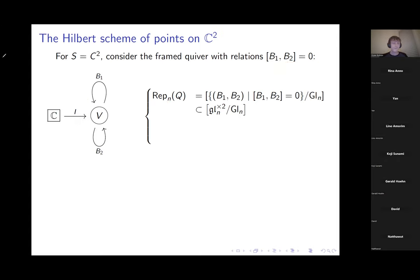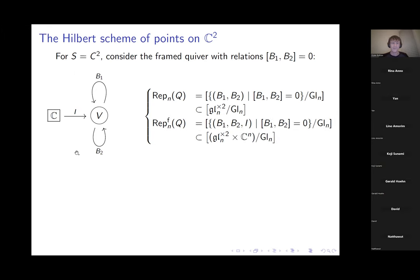The space of framed representations is thus the space of triples (B₁, B₂, i) such that B₁ and B₂ commute, considered as a sub-stack of the quotient of GL_n × GL_n × ℂⁿ. We then consider the sub-variety defined by the condition that the vector i generates V under the endomorphisms B₁ and B₂ — i.e., i is a cyclic vector.